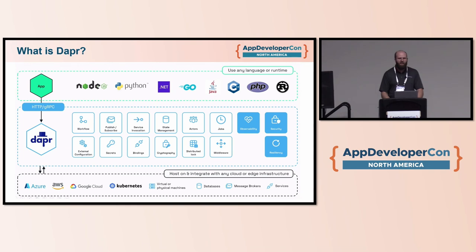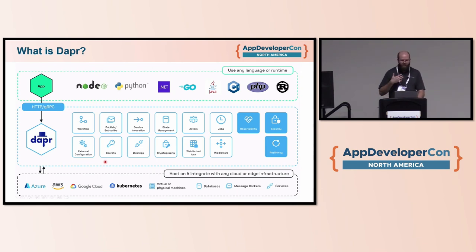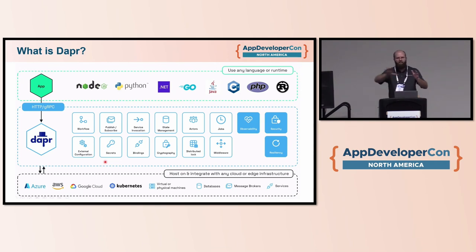DAPR is comprised of a bunch of building blocks: workflows, actors, PubSub, and more. It's not providing these capabilities itself — it is an abstraction for other service providers that do that. So if you need PubSub and want to use Kafka or JetStream, you write once against DAPR and DAPR handles the abstraction to each of those providers, so you can swap out what you're using under the hood.